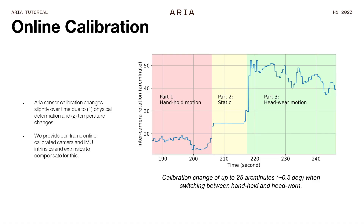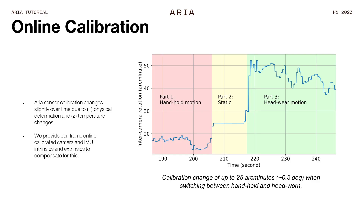We're also doing online calibration. One of the requirements for this is very accurate geometric calibration of all the sensors involved. As much as we try to make Project ARIA glasses as rigid as possible, there are some deformations — especially when you put them on and take them off. So we provide, in addition to the poses, a per-frame online calibration that gives you all sensor calibrations at frame rate. You can see a concrete example where the user holds the device and puts it on their head, and the left and right cameras bend by about half a degree between them just from that motion.